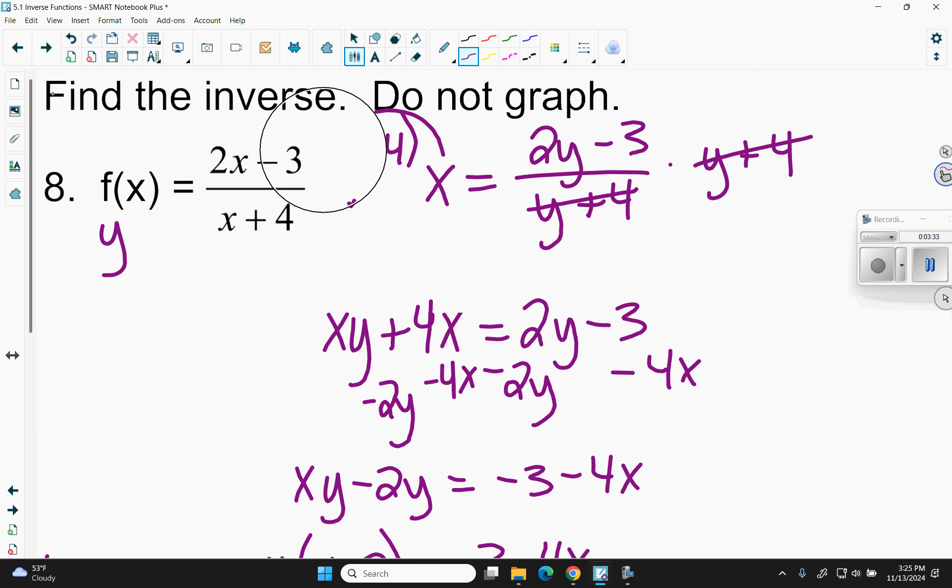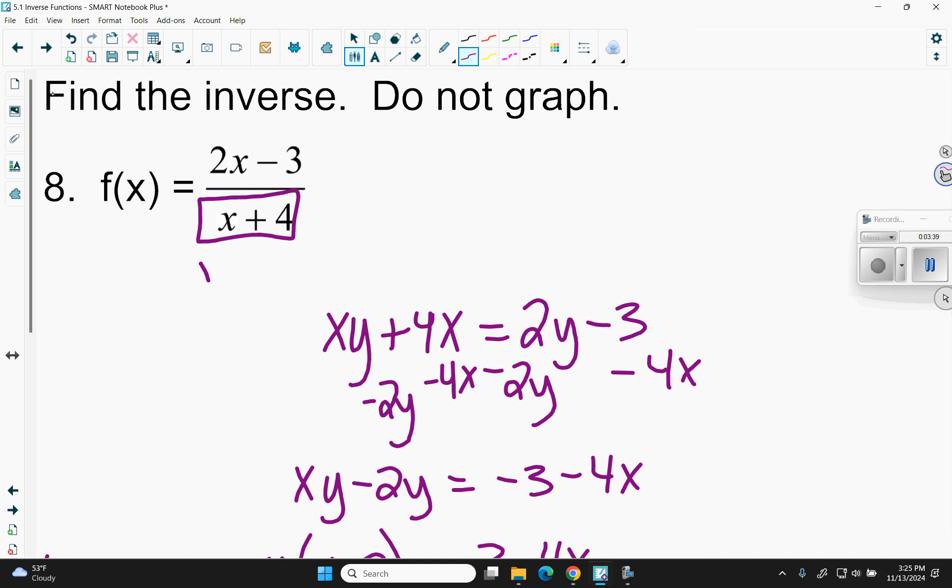If I wanted to find the domain of this, think about what I can't have. So if the vertical asymptote is x equals negative 4, then my domain is everything but that. So I can say negative infinity to negative 4, skip over it, negative 4 to infinity.